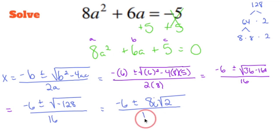And that's going to be all over 16. Now that's an even number, that's an even number, that's an even number. So to go a little bit further, I can pull out a 2, which gives me negative 3 plus or minus 4i root 2 over 2 times 8. Cross out the 2s.